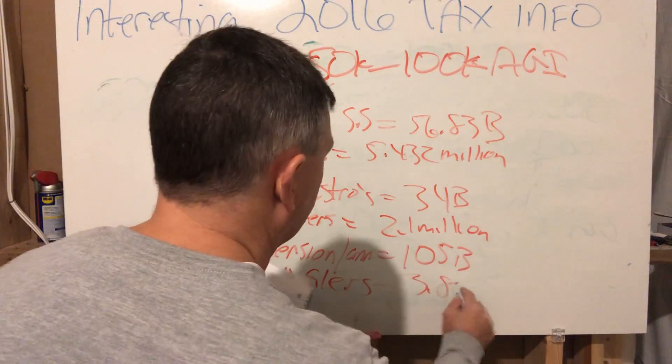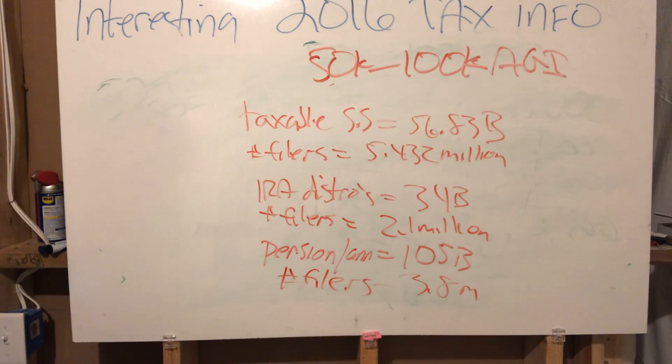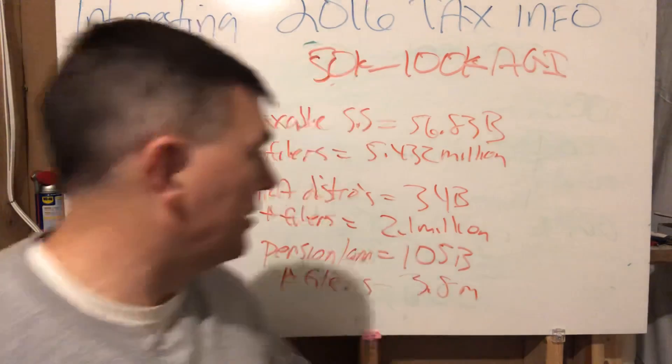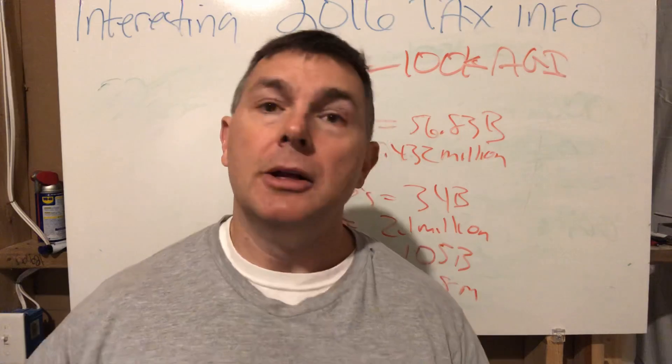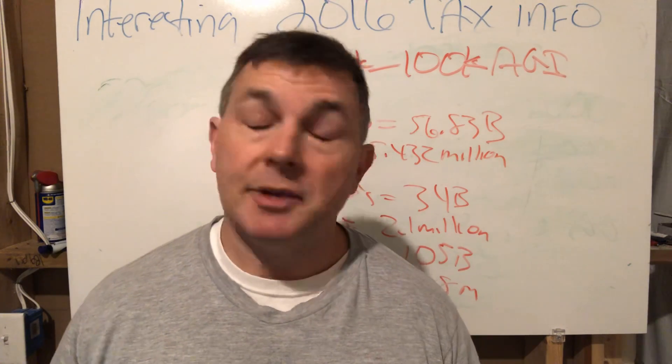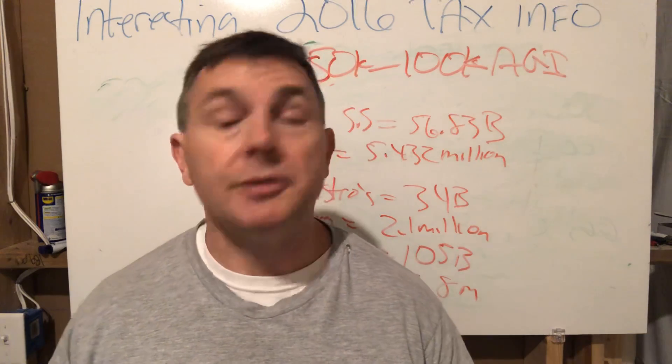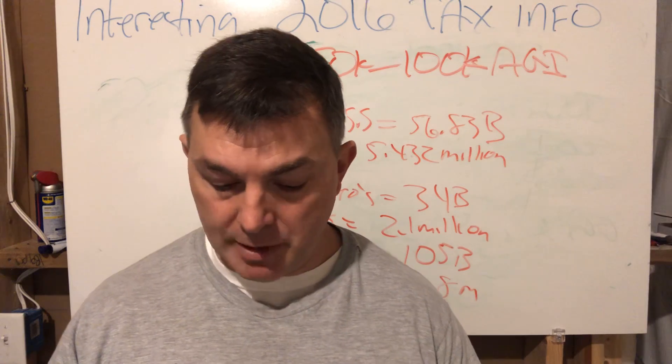We had more people by far paying taxes on social security than had IRA distributions or had pension distributions. A whole lot of people paying tax on social security. With the standard deductions with no more itemization, it's only going to be worse if you're not being careful.